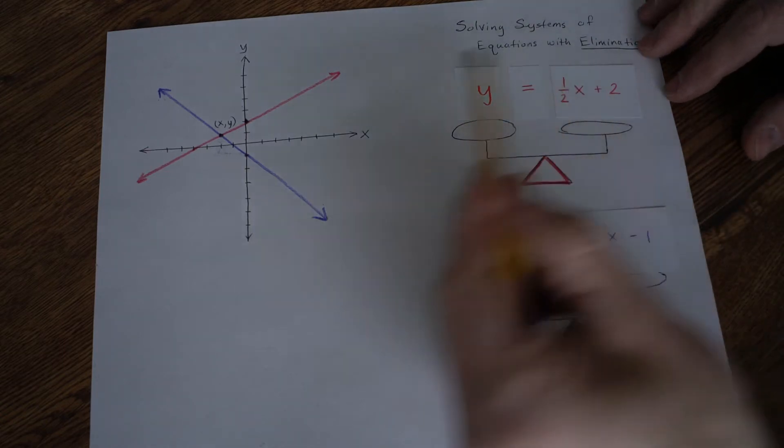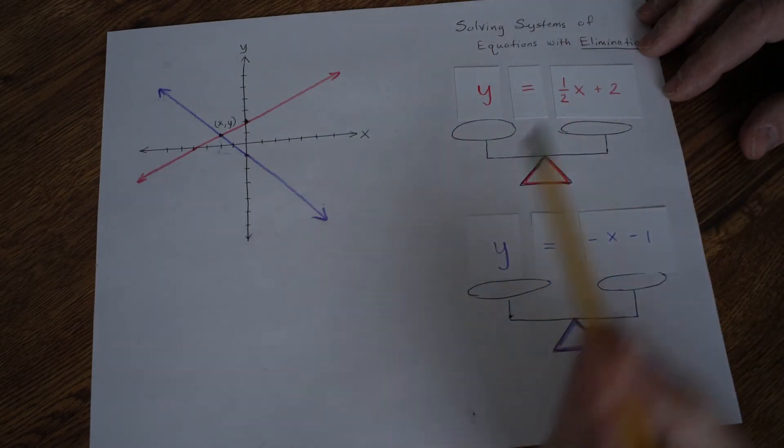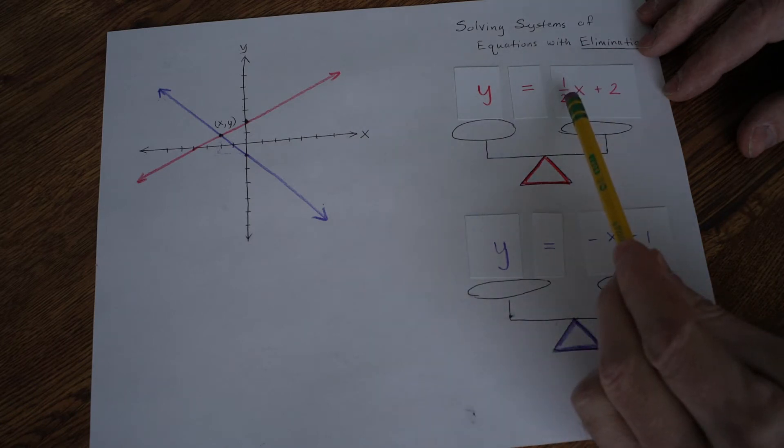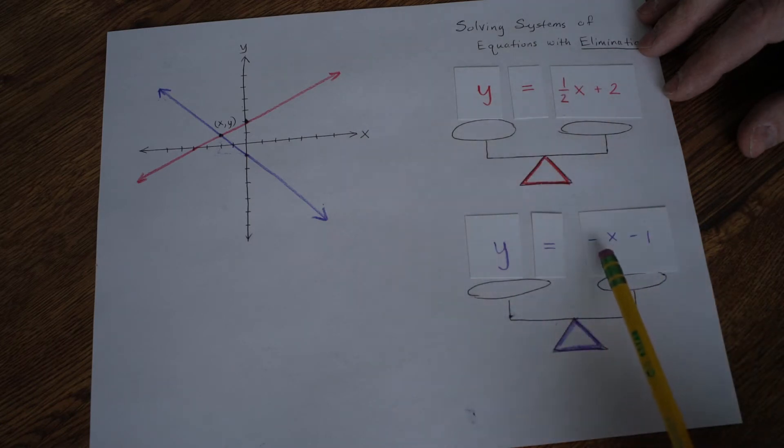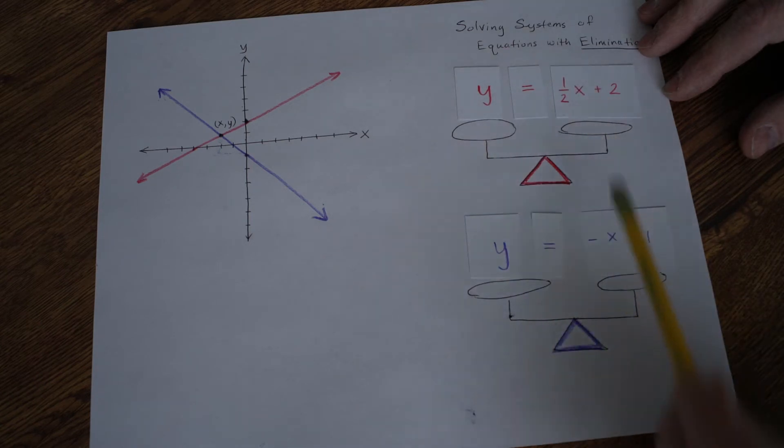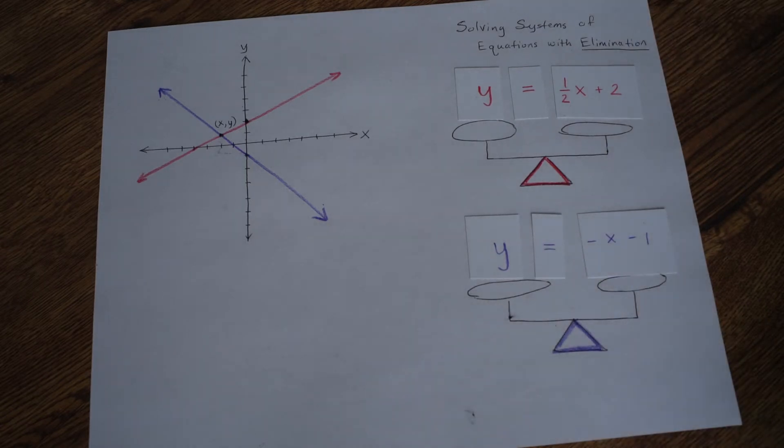Now, adding this scale to this scale, it would work really nicely, wouldn't it, if this was just a 1x, and this was a negative 1x? Wouldn't that work out nicely if we added them? Because 1 plus negative 1, that would equal 0x's, and we'd have the x's gone.